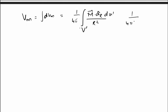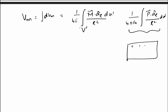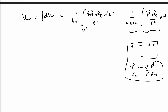This is similar to the dielectric case where we had one over 4 pi epsilon naught times the integral of P dot a_r over r squared. From that, we found that the dielectric can be considered equivalent to two kinds of charge densities: one volume charge density and one surface charge density.